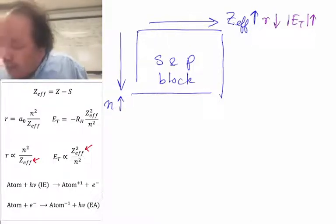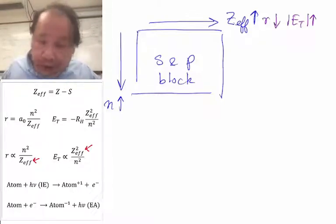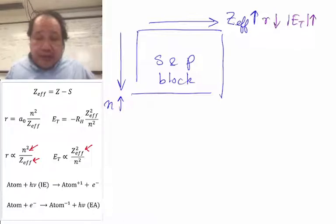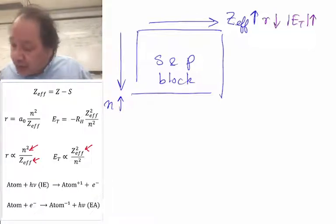And so when we look at that, we see that when N increases, N is increasing here. So there's an increase of N here. Now that's in the numerator. So when N increases, R increases.